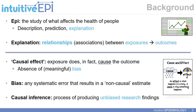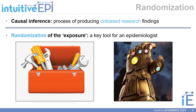In epidemiology, randomization — or more specifically, randomization of the exposure or treatment that people receive — is a powerful tool in our mission of estimating causal effects, or producing unbiased scientific research findings that can be used to inform good decision making.